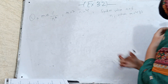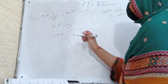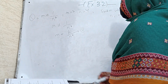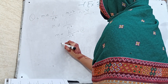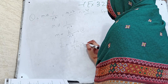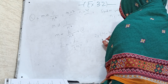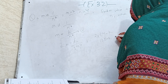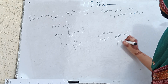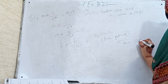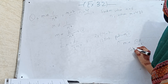Since m is inversely proportional to 1 by n cubed, m equals k divided by n cubed — this is the first equation. We put m equal to 2 and n equal to 4: 2 equals k divided by 4 cubed, so k equals 2 times 64, which is 128. Substituting back: m equals 128 divided by n cubed. To find m when n equals 6, we put n equal to 6.